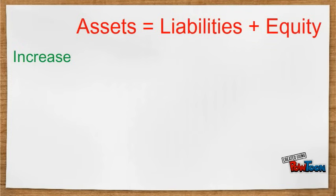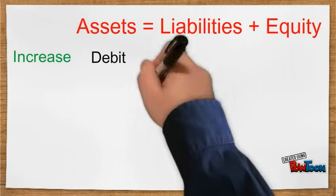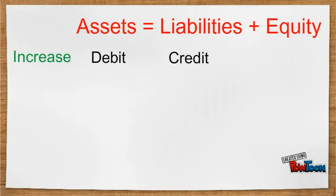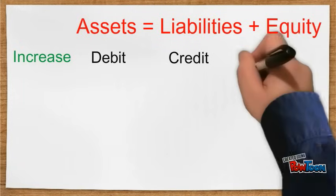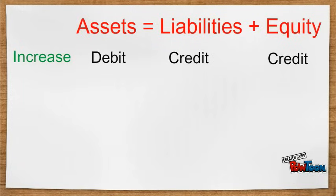When we increase assets, we will debit an asset account. When we increase liabilities, we will credit a liability account. When we increase equity, we will credit an equity account.